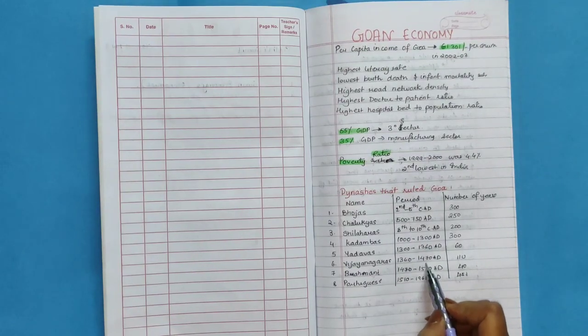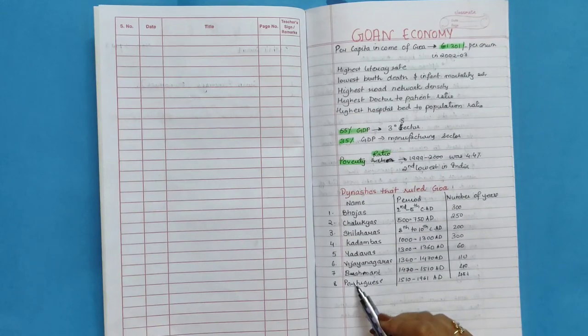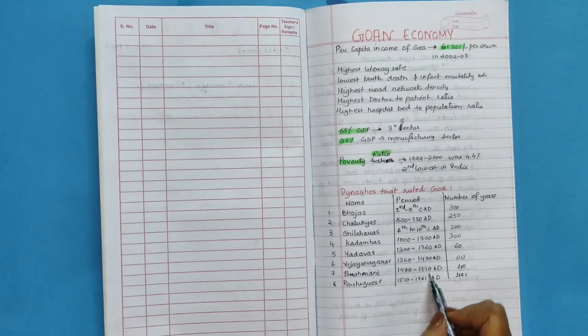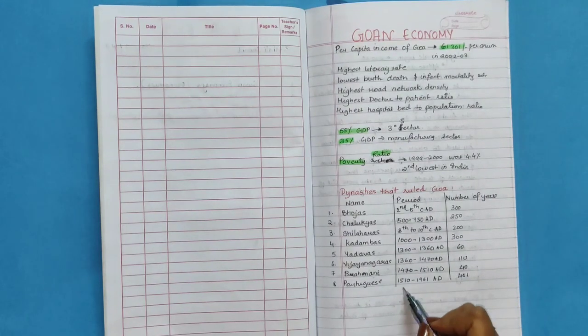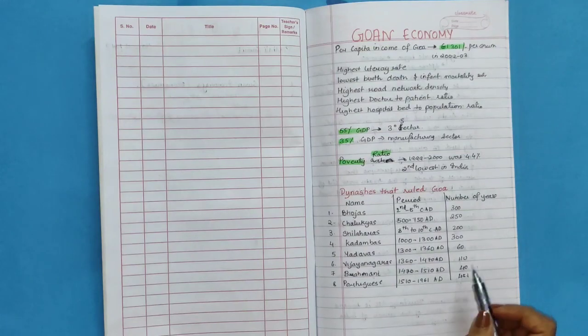110 years. Bahmani 1470 to 1510 AD, 40 years. And Portuguese 1510 to 1961, that was 451 years.